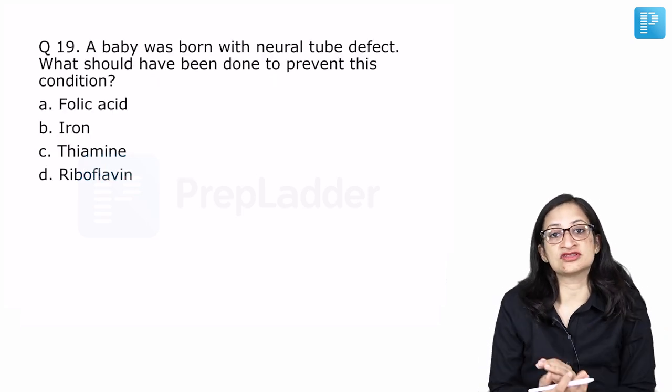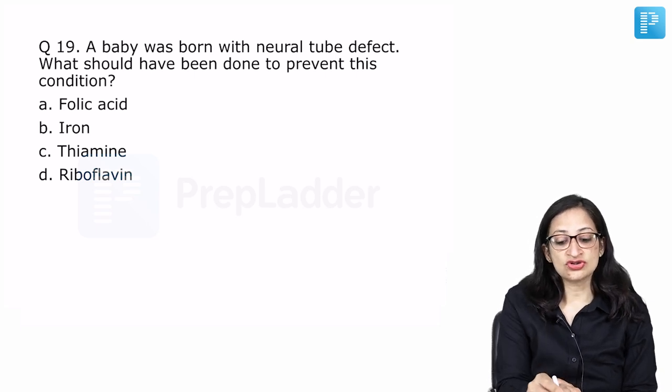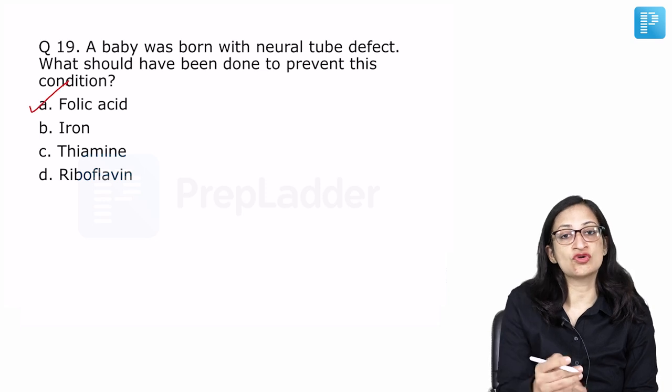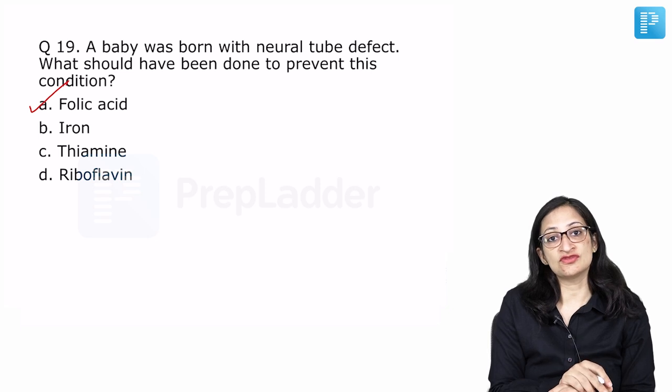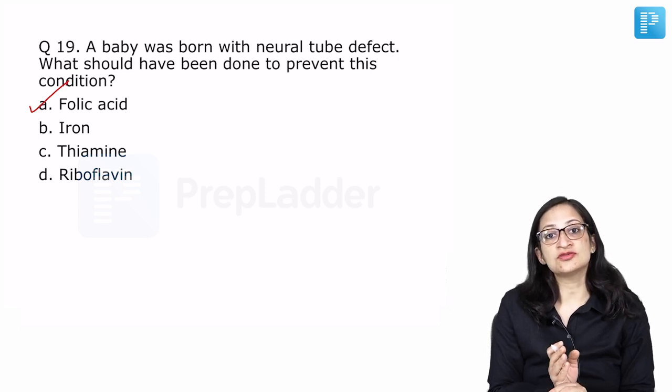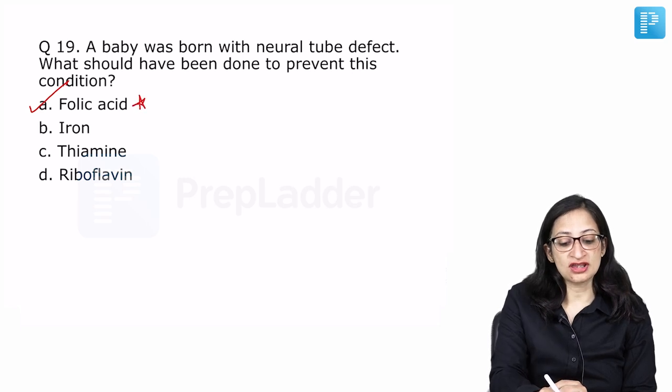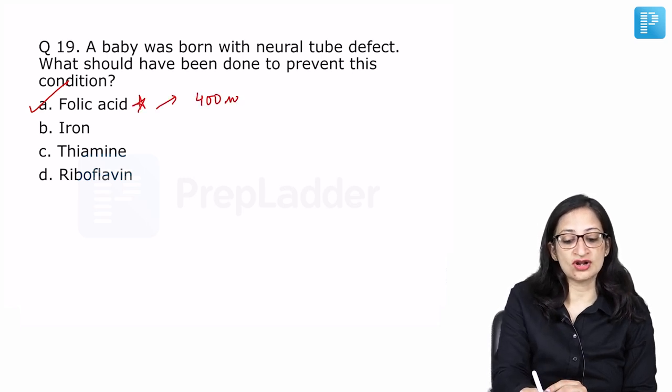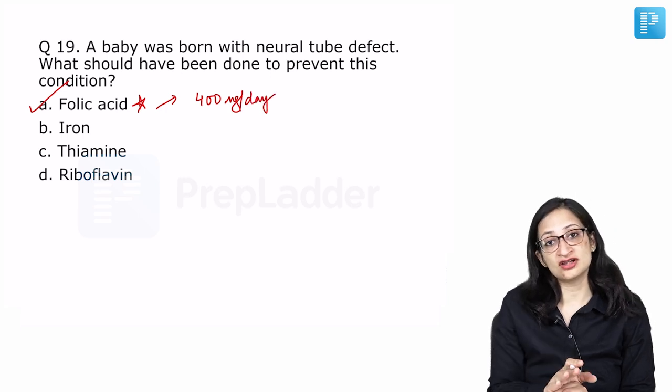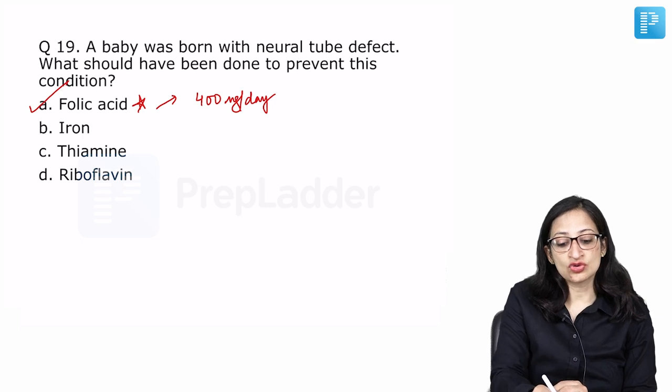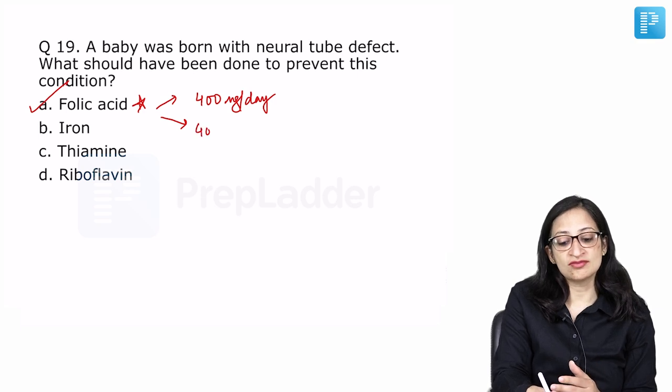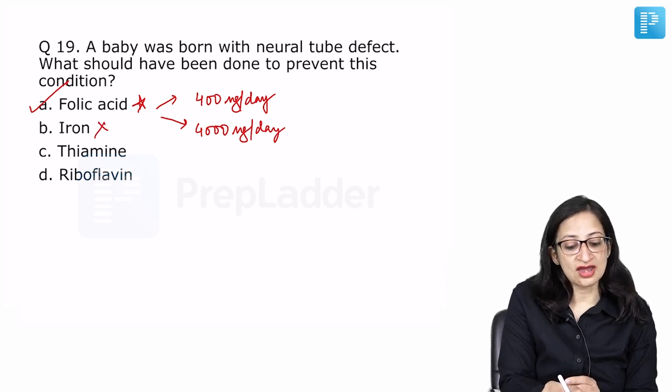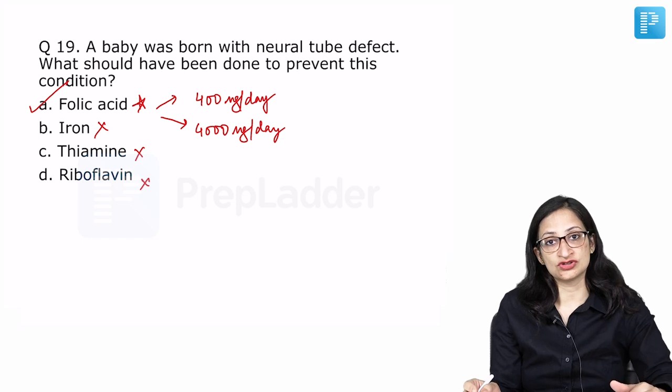A baby was born with neural tube defects. Some people said it was anencephaly the condition. What should have been done to prevent this condition? As we mentioned, if the folic acid has been started in the mother before conception, at least one month before conception and continued through the pregnancy, it helps in preventing the neural tube defects. What is very important again is the dose of folic acid. It should be 400 microgram, at least 400 microgram per day. It is actually recommended in all girls of childbearing age. And in those mothers who are high risk, that means who have had a previous baby with neural tube defects or who are on some anti-epileptics, for them, the dose recommended is 4000 microgram per day or 4 milligram per day. Iron, no. Thiamine, no. Riboflavin, no. This will not help in preventing neural tube defects.